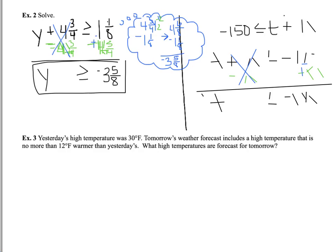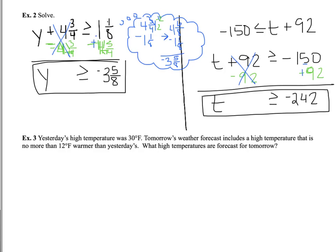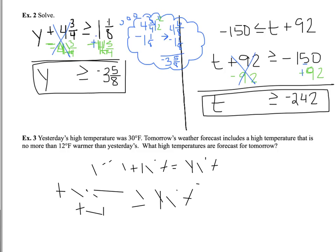Example 3: Yesterday's high temperature was 30 degrees Fahrenheit. Tomorrow's weather forecast includes a high temperature that is no more than 12 degrees warmer than yesterday's. What high temperatures are forecast for tomorrow? Since yesterday's temperature was 30 degrees Fahrenheit, we can't have any more than 12 degrees more than that — we know we can't go any higher than 42 degrees Fahrenheit. So we need to write this as an inequality: tomorrow's temperature can be no more than — and 'no more than' means less than or equal to — 42 degrees Fahrenheit. It can be 42 degrees Fahrenheit or less, but it can't be more.